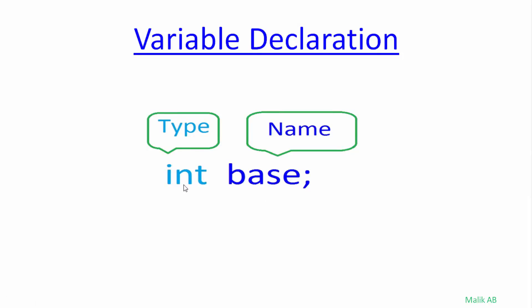As we know, for an int type variable, 4 bytes are allocated. It means that 4 bytes have been allocated to this variable 'base'. But what memory specifically is allocated to this base variable? Let's talk about it.